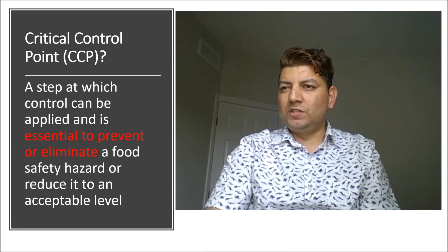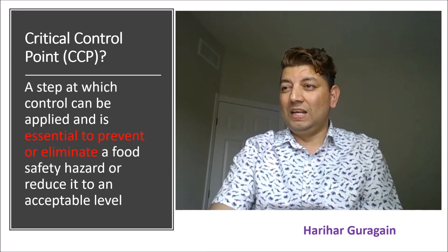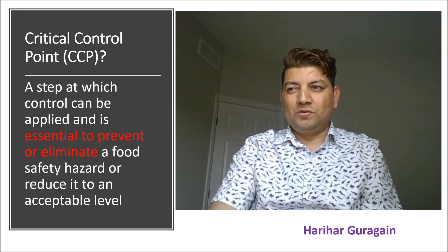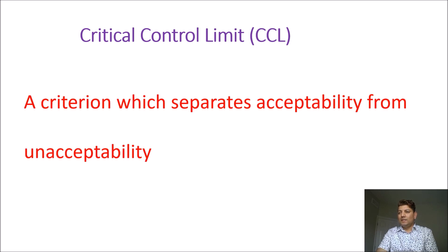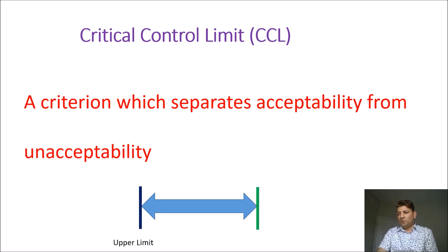CCP is a control step which must be applied to prevent, eliminate, or reduce a hazard to an acceptable level. This acceptable level is defined by the Critical Control Limit, or CCL. CCL might be a range or up to a certain value. For example, if metal particle is a CCP, then up to 2mm iron particle can be a CCL. In the food industry, CCLs are based on research, government recommendations, customer needs, or industry experience.